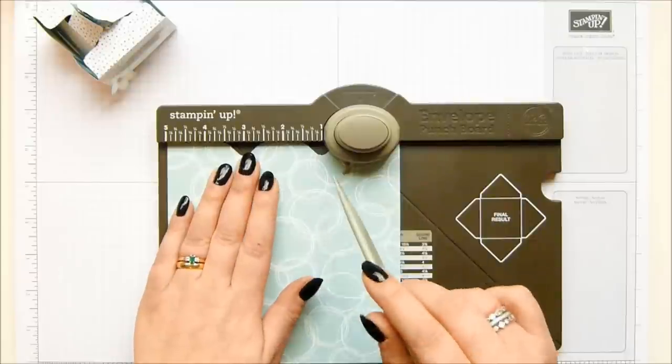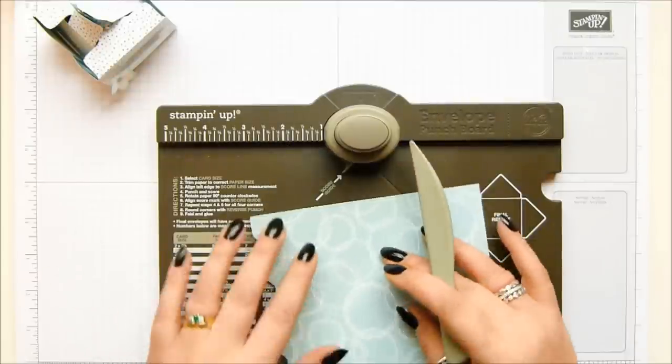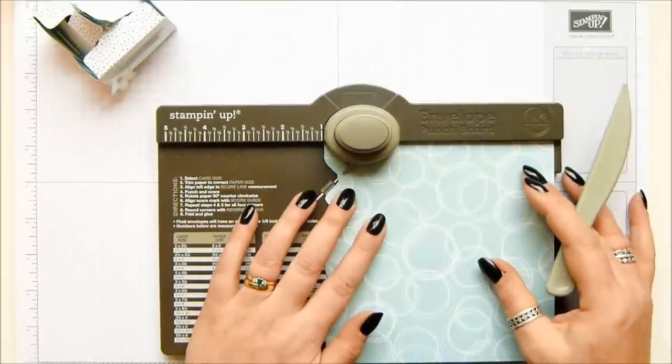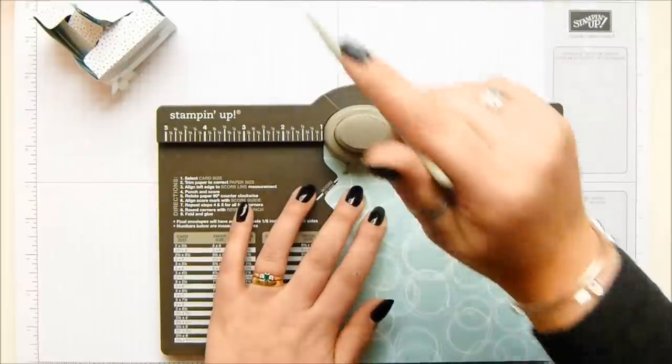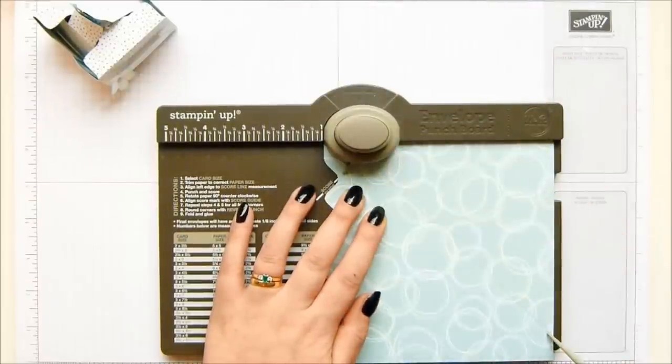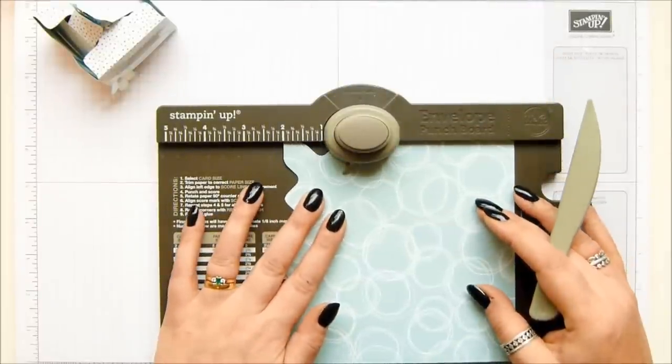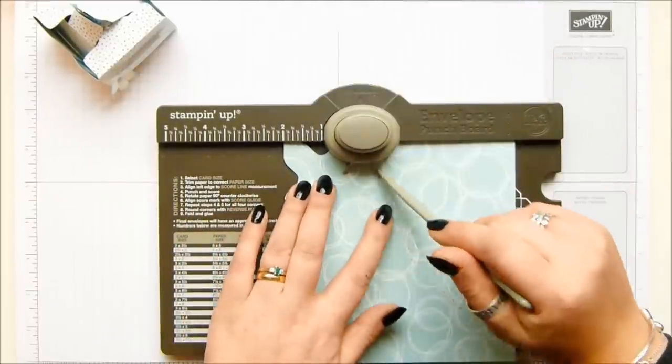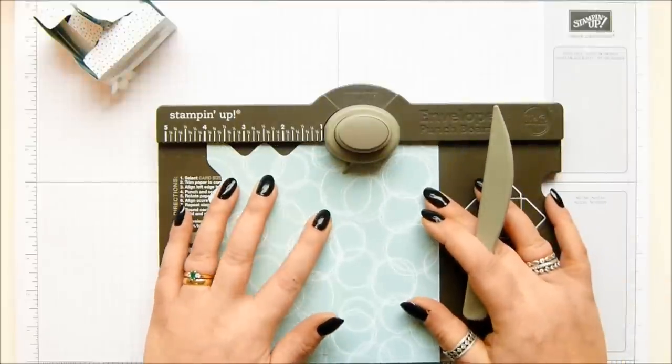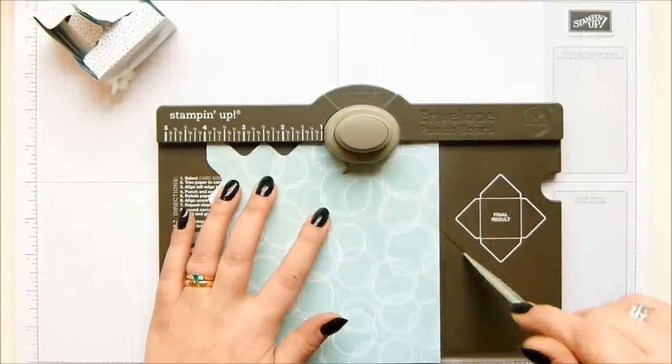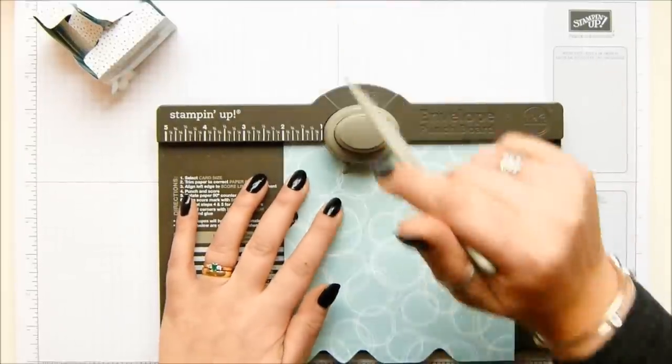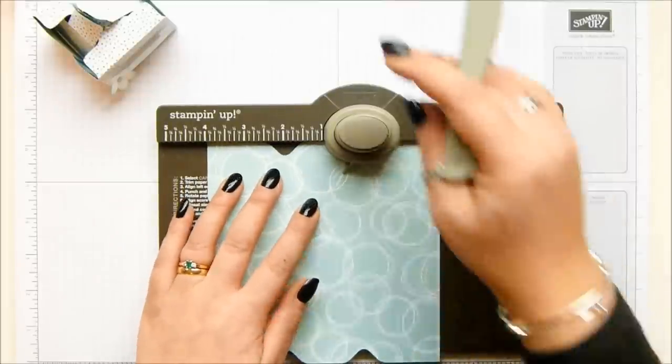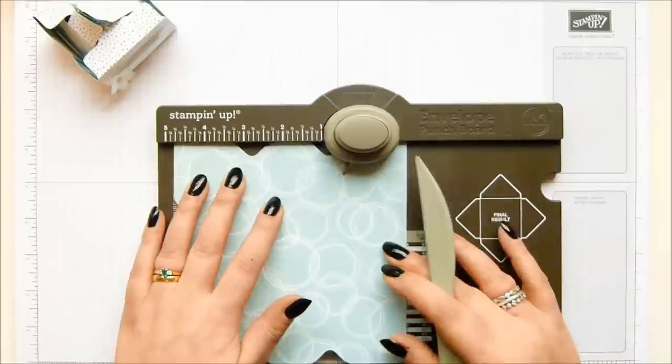So that is 5, 10 and 12 and a half centimeters and then you come round and you just use the scored lines, the lines you scored before, to punch and score again. So you just keep going all the way round. Keep moving it, keep sliding it. So you're putting three punch and scores on each side and once you've got the first side on it's easy to do the following sides.